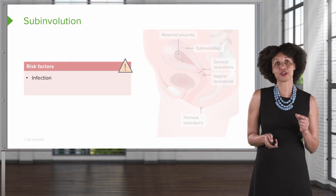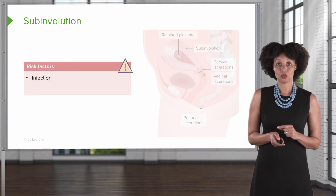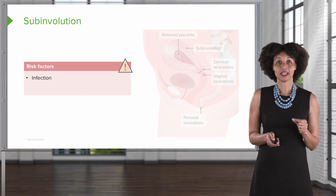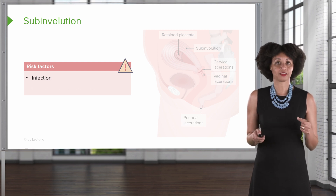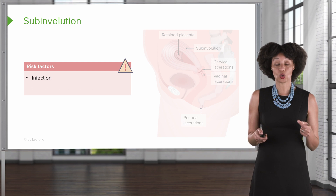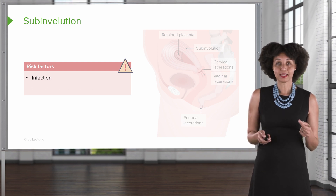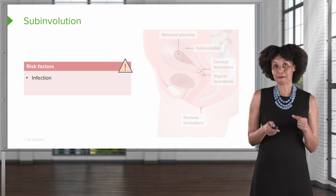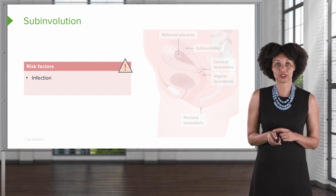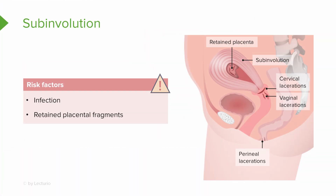What are the risk factors for developing subinvolution? One is infection — if the uterus becomes infected because of chorioamnionitis or endometritis after delivery, that infection will impede the descent of the uterus. Another factor is retained placental fragments; if elements of the pregnancy are still left inside, this will also make it very difficult for the uterus to contract and will cause subinvolution.